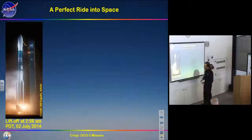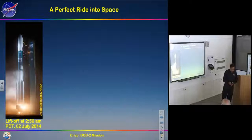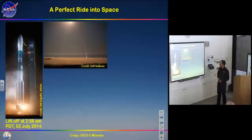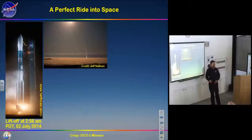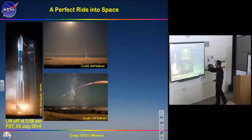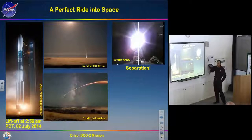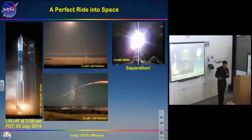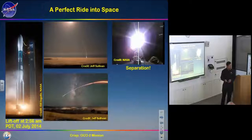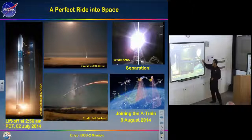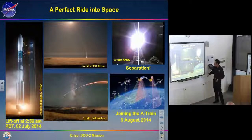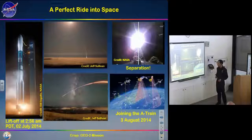The launch was absolutely perfect from Vandenberg Air Force Base, though it was too cloudy to see from there. From Santa Cruz a few miles north, it was a beautiful launch coming out of the cloud tops. Just under an hour after launch, a camera on the launch vehicle captured the spacecraft detaching and flying off on its own. Solar panels opened, we were power positive, and it took about a month using four small thrusters to move into the A-Train and sync with other satellites flying at seven kilometers per second.